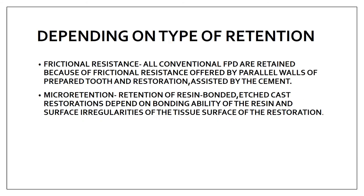The next is depending on the type of retention — whether it is frictional retention or micro-retention. All conventional FPDs are retained because of the frictional resistance offered by the parallel walls of the prepared tooth, assisted by cement. Micro-retention is when you are etching the surface — the retention of resin-bonded etched cast restorations depends on the bonding ability of the resin and the surface irregularity.